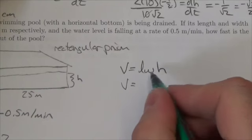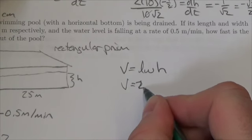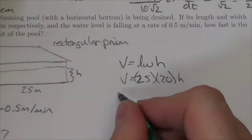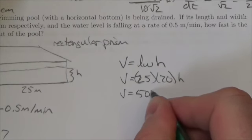So volume is going to be length times width and h is the variable here. So now that's going to simplify down into 500h.